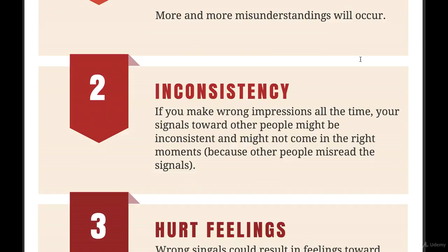The second problem is inconsistency. If you make wrong impressions all the time, your signals to other people might be inconsistent and might not come at the right moments, because other people misread the signals. For instance, imagine you're sending out a signal that you're unhappy in a certain moment, but other people misread that as you being happy. Sometimes you might feel extremely happy but send out the wrong signal, and people wonder: is this person happy or not? It seems like you're being inconsistent in your personality. People who don't have a stable personality cause problems in any environment. That's why I always say: be emotionally stable, but also have a stable personality — these two things are different from each other, though they are connected to a certain degree.